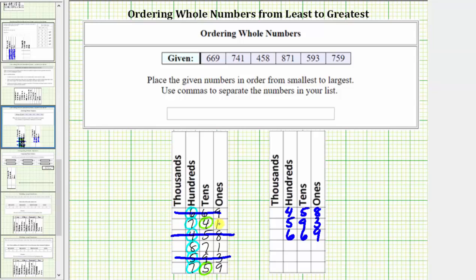Because four is less than five, seven hundred forty-one is less than 759, which means for the sorted list, the next value is 741 followed by 759.